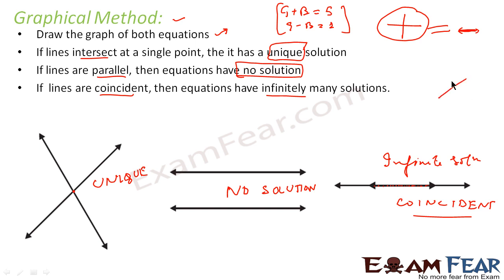If you have two equations and you are trying to find a solution, you are trying to find a common point that satisfies both equations. That means you are trying to find a common point on line 1 and line 2. If you find one common point, it has a unique solution. If you find infinite common points — both lines overlapping — there are infinite solutions. If the lines are not meeting at all, there is no common point, meaning there is no solution.